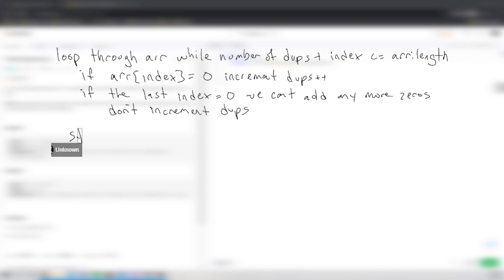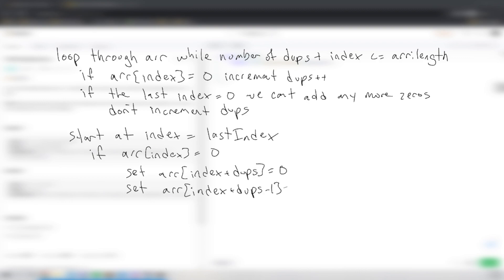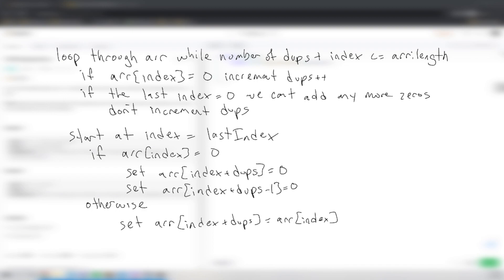After this first loop is over, we start at the last index we found. If the array at that index is equal to zero, we set array[index + dupes] equal to zero. We also set the one previous position, array[index + dupes - 1], to zero, to duplicate it. Otherwise, we set array[index + dupes] equal to array[index]. So we basically have a two-pointer approach, keeping track of a couple of different indexes. Let's run through an example to make it clearer.